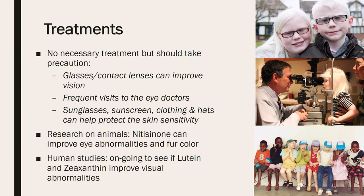Since people with albinism are generally healthy otherwise, there is no real treatment. However, the goal of treatment is not necessarily to eliminate the disorder but to relieve the symptoms. Some ways this can be done include wearing glasses or contact lenses to improve vision, having frequent visits to the eye doctor to help improve visual acuity, and wearing sunglasses, sunscreen, protective clothing, and hats to protect their skin from the sun.